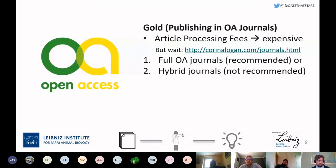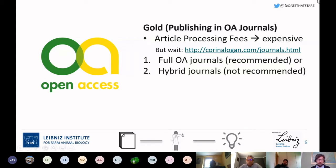Most of you are already familiar with open access. The most prominent option is gold open access, which means publishing in open access journals or making the article open access to a wider audience. This usually involves article processing fees, which can be quite expensive depending on the journal. I've included a link to a list of journals that do not require open processing fees or have relatively small fees, including journals serving animal behavior or zoology audiences.